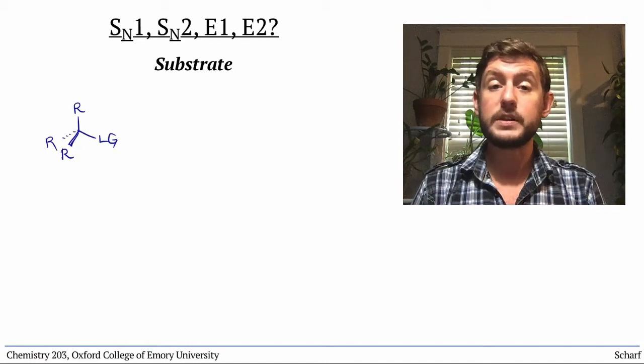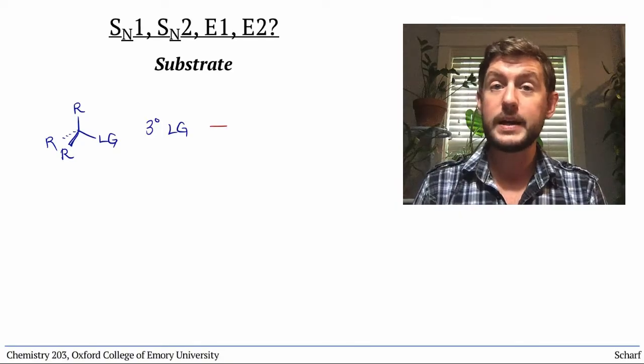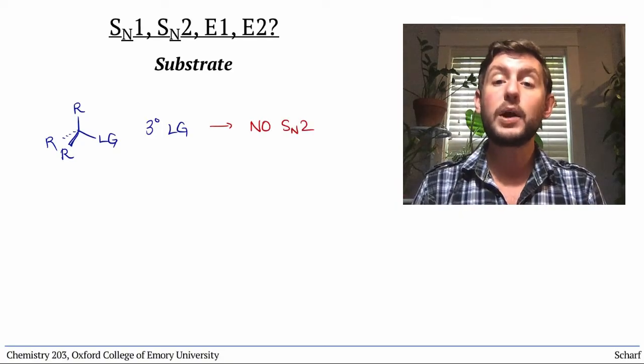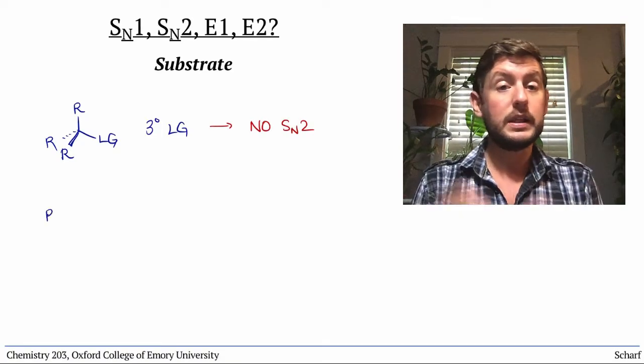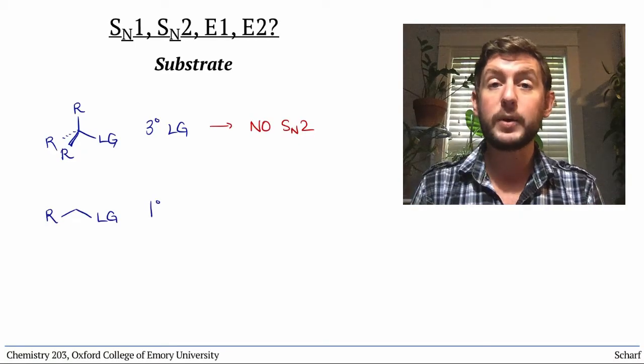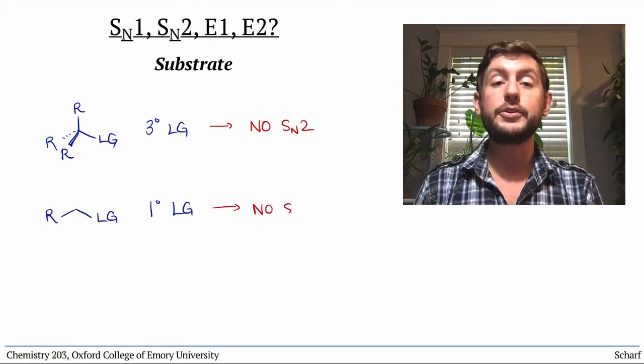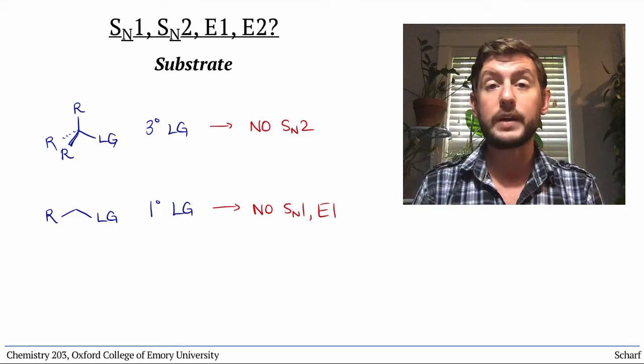Tertiary leaving groups, for instance, do not undergo SN2 reactions, and primary leaving groups can't just leave on their own to make primary carbocations, so those substrates will never undergo SN1 or E1 reactions.